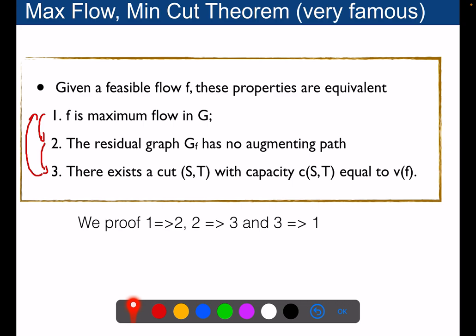How do we prove that 2 implies 3? The residual graph GF has no augmenting path, or there exists a cut ST with capacity C(ST) equal to V(F). The way we will do that is to start from a maximum flow, build the residual graph, and constructively identify a partition ST with capacity equal to C(ST), which is exactly equal to the value of the flow.